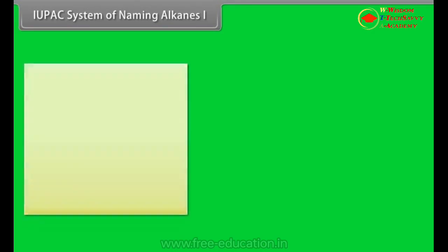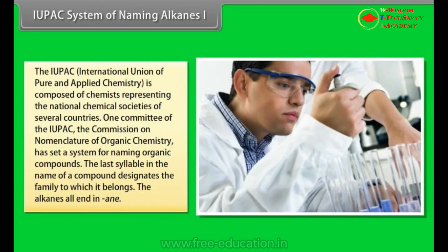IUPAC system of naming alkanes. The IUPAC, International Union of Pure and Applied Chemistry, is composed of chemists representing the national chemical societies of several countries. One committee of the IUPAC, the Commission on Nomenclature of Organic Chemistry, has set a system of naming organic compounds. The last syllable in the name of compound designates the family to which it belongs. The alkanes all end in -ane.